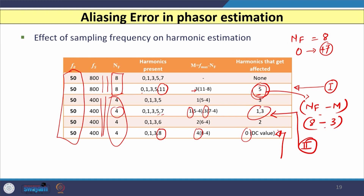In summary, whenever higher-order harmonics greater than NF are present in the acquired signal, their effect is reflected on the estimation of other harmonic components. In this class we covered: how to calculate the weight matrix (CW and SW), how to compute ICW and ISW, how to estimate phasors for DC, 1st, 3rd, and 5th harmonics, and the important aliasing error effect — where harmonics greater than NF corrupt the phasor estimates of lower-order components. Thank you very much.